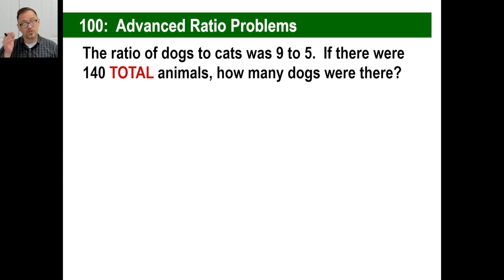Well, here's a little twist on it. The ratio of dogs to cats was 9 to 5. Same thing. If there were 140 total animals, how many dogs were there? That's different, right? Not the same thing. Total animals. Here's the trick. You ready?